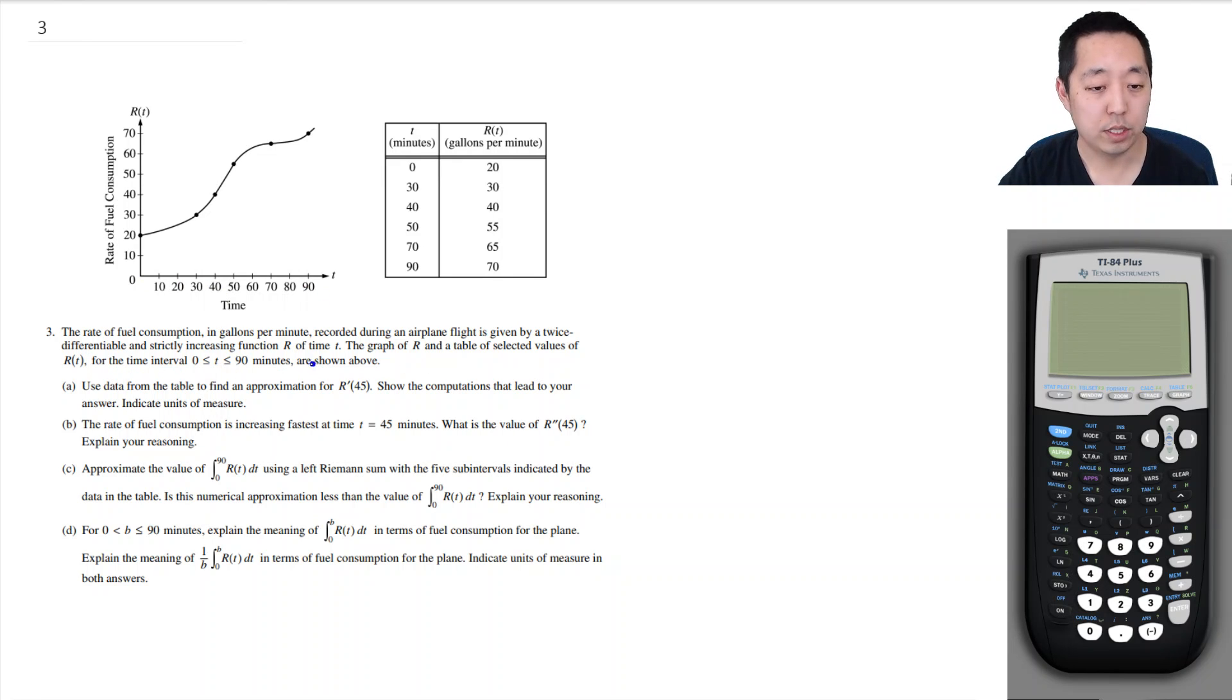With a time from 0 to 90 minutes are shown above. Use the data from the table to find approximate for the derivative R' of 45. Show the computational linear answer in case units of measure. So I want this slope, this is R and this is 45, I want this slope here.